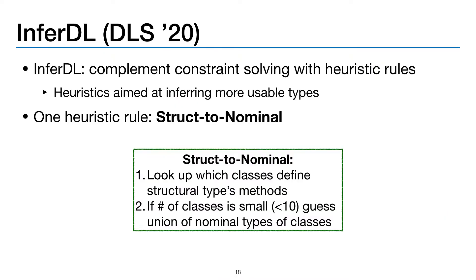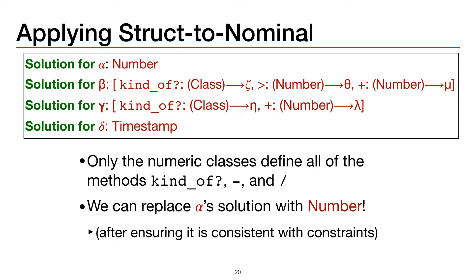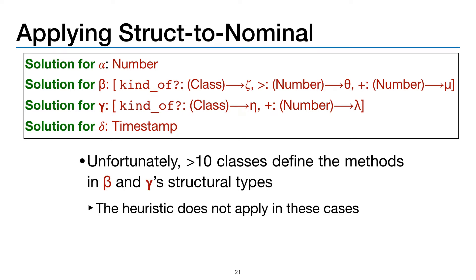Recent work implemented InferDL, a system that complements constraint solving with heuristic rules aimed at inferring more usable types. For instance, one heuristic rule called StructToNominal converts structural types to nominal types. At a high level, this rule looks up which classes define the structural type's methods, and if that number of classes is small — defined as less than 10 — it guesses the union of nominal types for those classes. In this case, only the numeric classes define all of the methods kind_of?, subtraction, and division, which are exactly the methods in alpha's structural type. So we can replace alpha's solution with the type number, after ensuring it's consistent with constraints. Unfortunately, more than 10 classes define the methods in beta and gamma's structural type, so this heuristic rule does not apply and we're stuck with those clunky structural types.